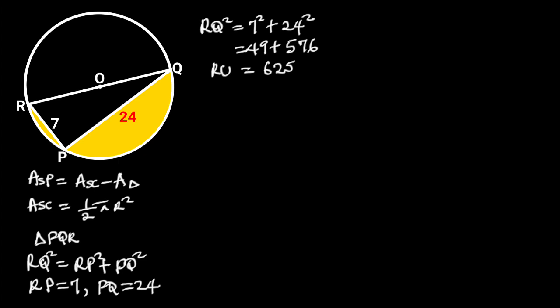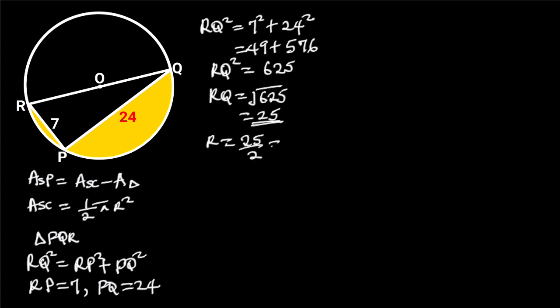So RQ squared is equal to 625. Taking the square root of both sides gives us RQ equals 25. Since RQ is the diameter of the semicircle, it follows that the radius is equal to 25 divided by 2, which is equal to 12.5.